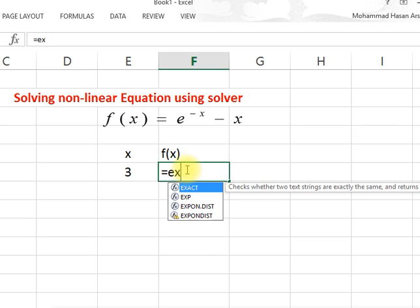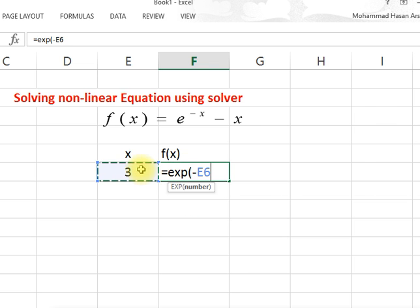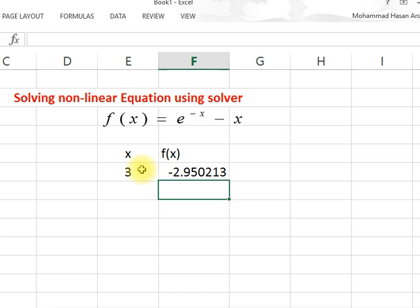It is exponential: exp(-x) minus x. This is the value of the function at x equal to 3.